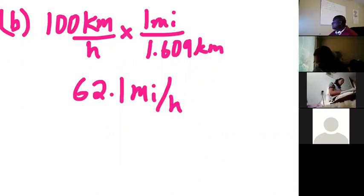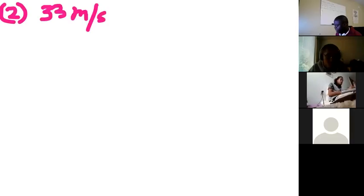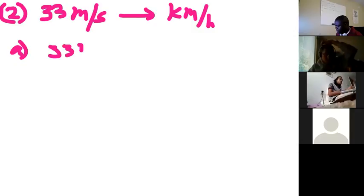Okay, the next conversion problem is from meters per second to kilometers per hour. So number two. Can someone read number two? A car is traveling at a speed of 33 meters per second. Part A is, what is its speed in kilometers per hour? And part B, is it exceeding the 90 kilometers per hour speed limit?